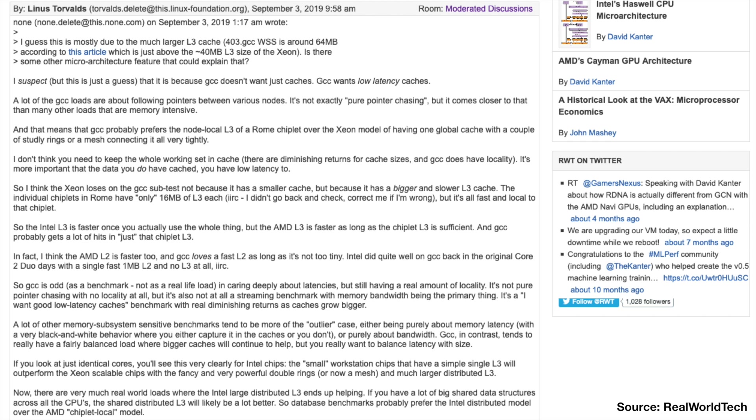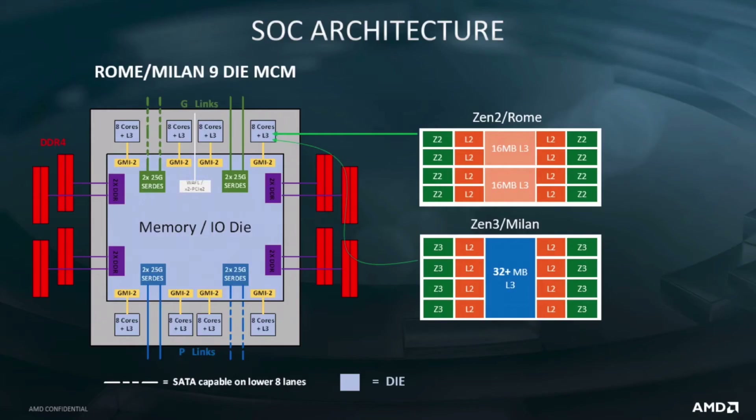I've been working on this video for a while, and things have started to catch up with me. At the HPC AI Advisory Council UK conference in September, Martin Hilgemann from AMD gave a presentation with some tidbits of information about Zen 3. He's showing two generations of the compute chiplet — Zen 2 and Zen 3 — and Zen 3 looks like exactly what I asked for: eight cores sharing one big L3 cache.